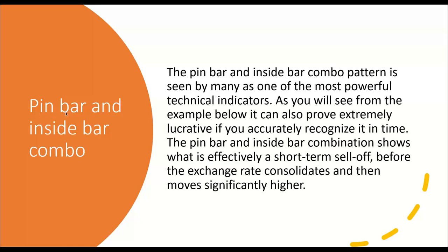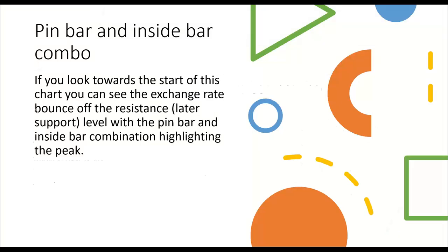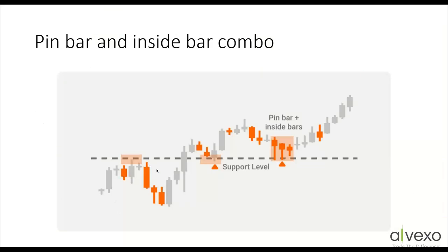One of the best ways to read price action is to look for specific patterns in your charts. Indecision candles are one great strategy. Pin bar and inside bar combos are another — seen by many as one of the most powerful technical indicators. Our pin bar strategy is right here: price broke through our support level, went up to resistance, came back down, and what we got was the exhibition of three down candles each with long pins, and then an inside bar — where this whole bar was inside of the previous bar — giving us a definitive buy scenario.